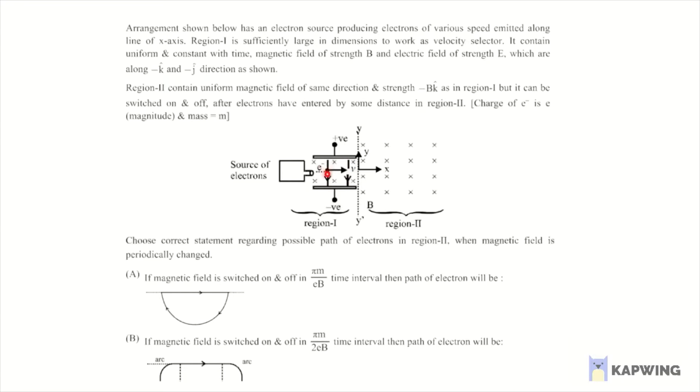So here electric field and magnetic fields both are given. Region 2 contains uniform magnetic field of same direction and strength minus B k cap, but it can be switched on and off after electrons have entered by some distance in the region. Charge of electron is e minus e, where e is magnitude and mass is m.